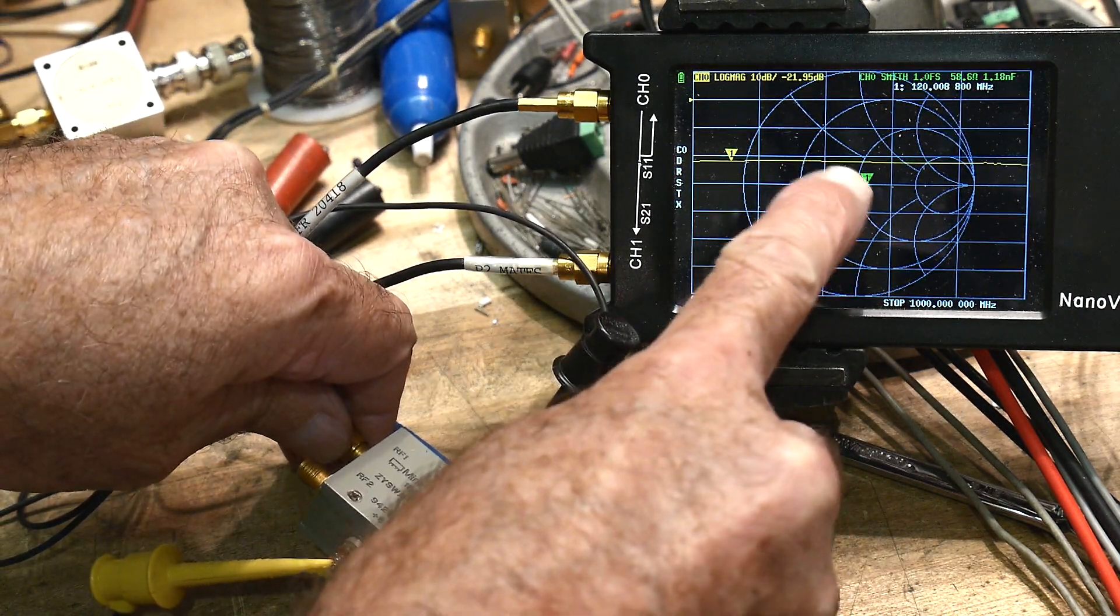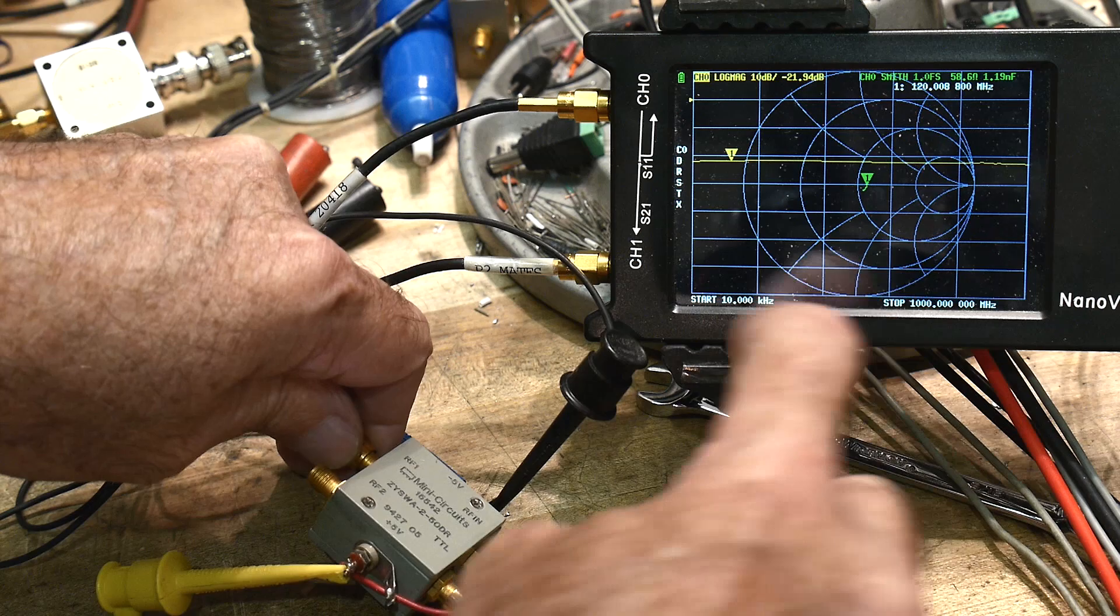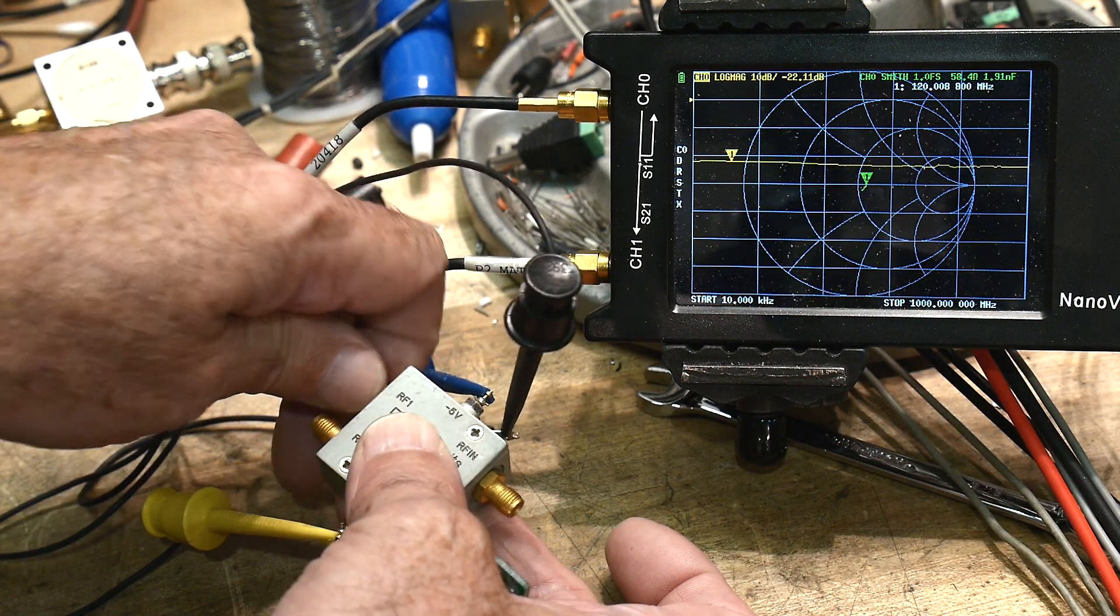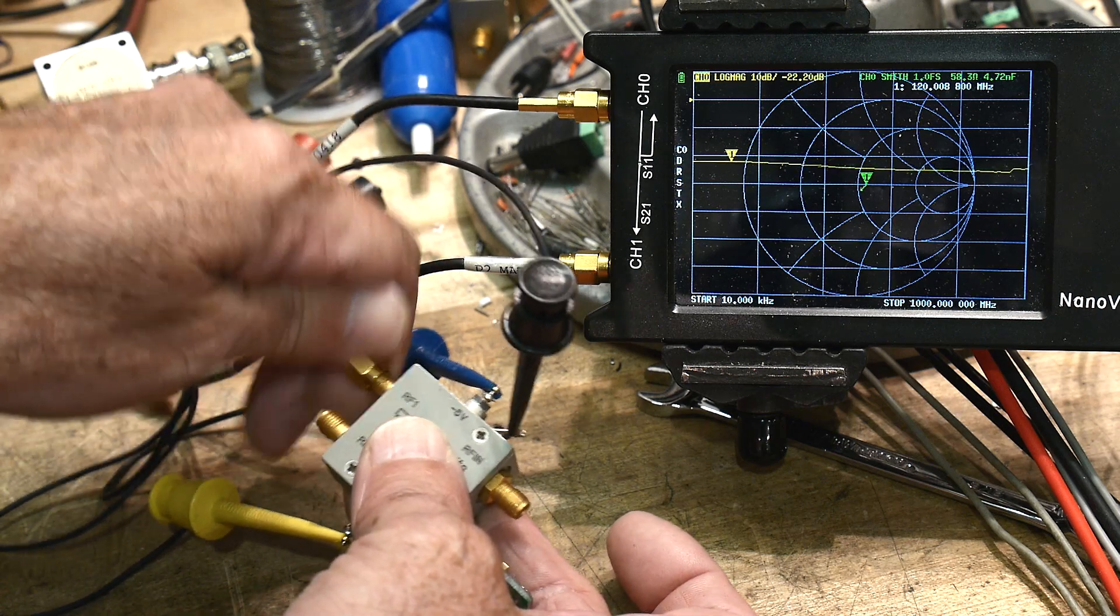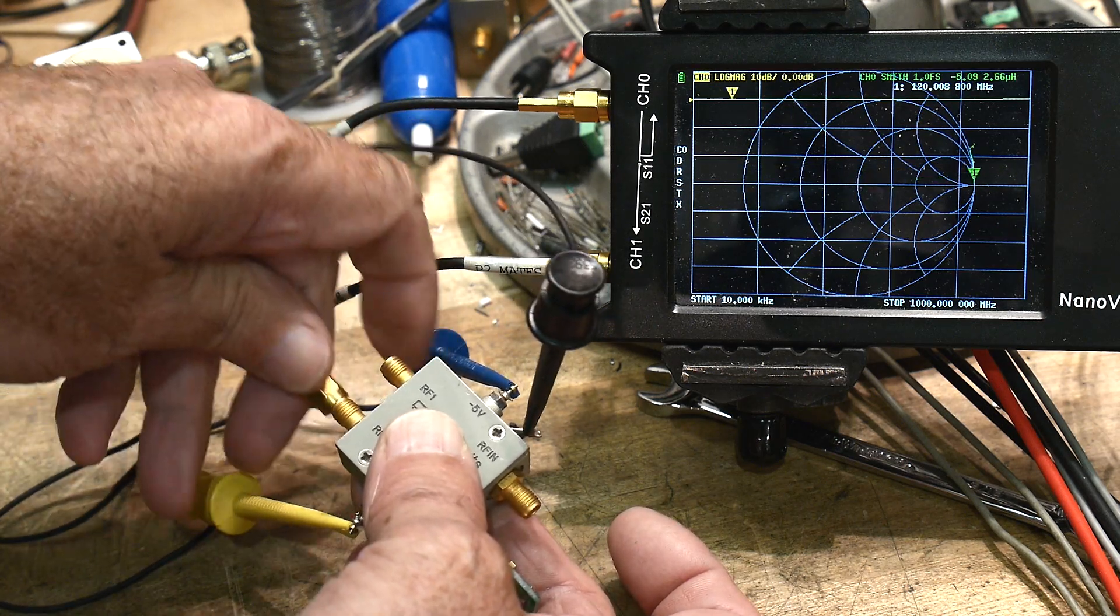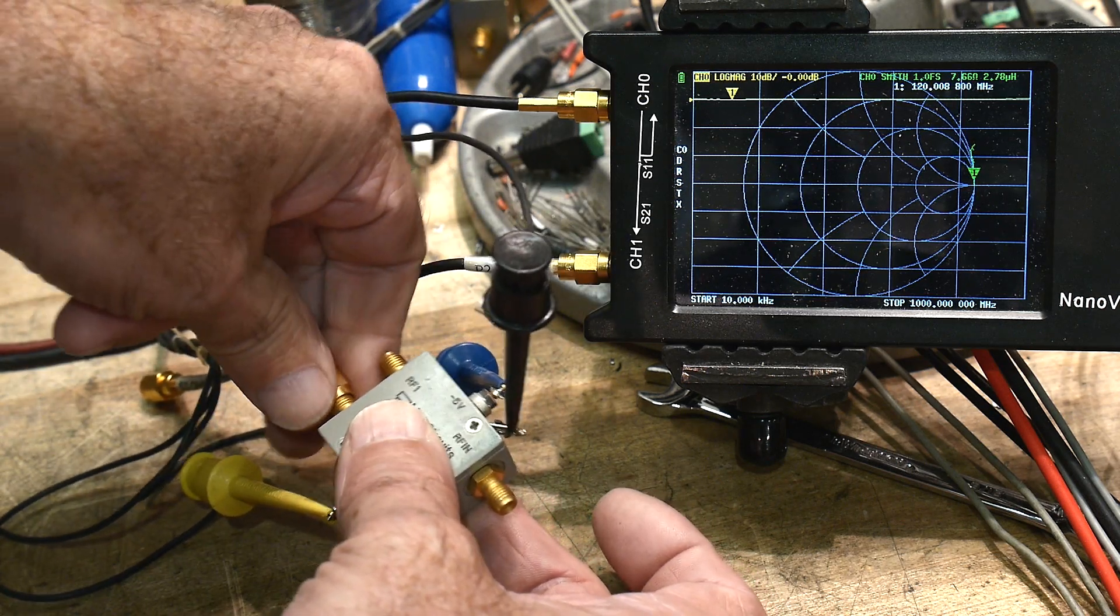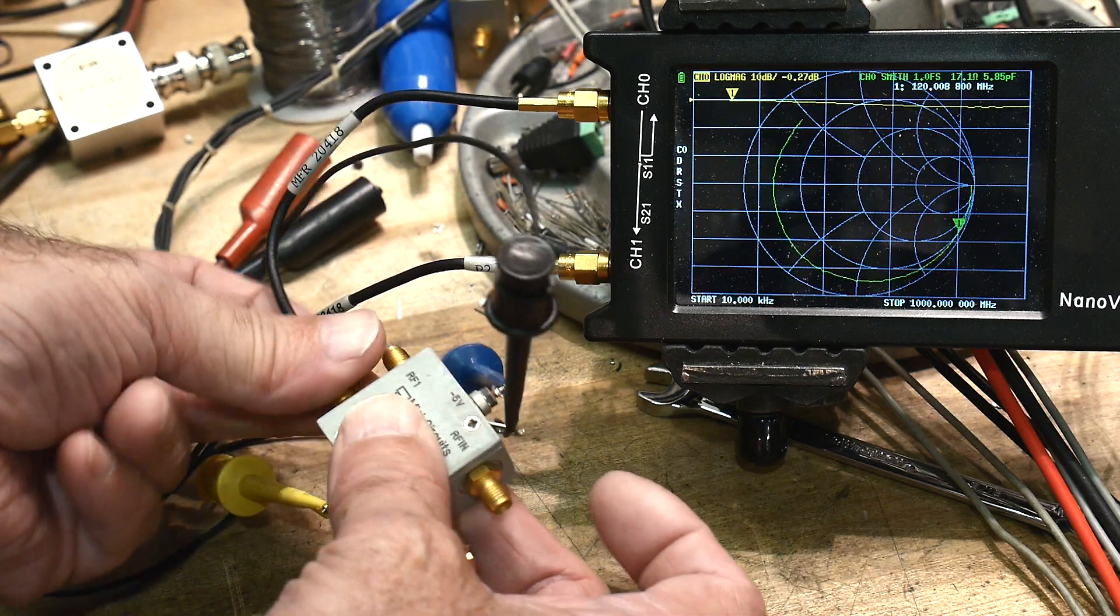So our Smith chart shows us just one little point there in the center from 0 to 5 gigahertz. So that one looks great. Let's take a look at RF2. See how that one's behaving. Now RF1 was normally closed, so it had the 50 ohm load already hooked up.